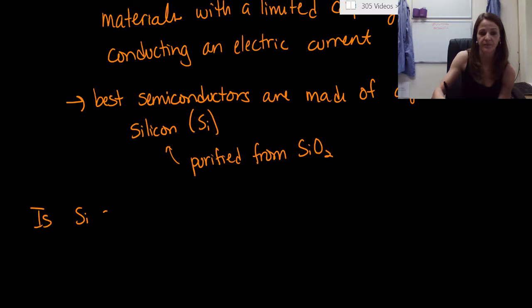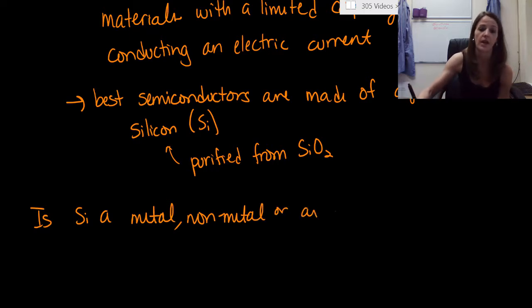So, is silicon a metal, a non-metal, or a metalloid?